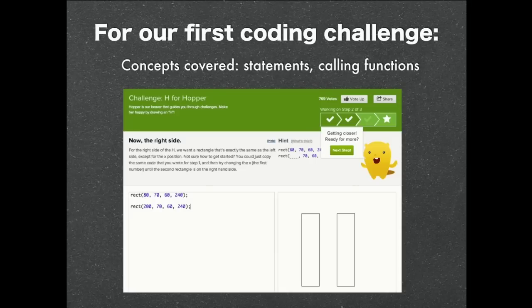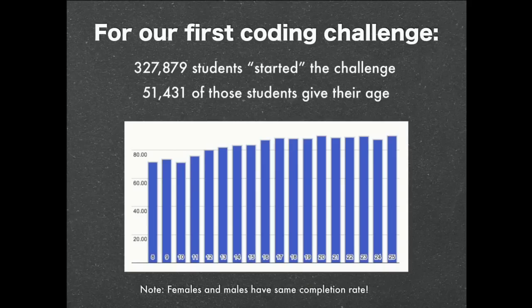So really the concepts they're using are statements, syntax, and calling functions. We've had 330,000 students start the challenge, which just means they've loaded the page. Only 13% of those we actually have age data for, because we don't require age. So we have 51,000 students that have started that challenge with age data.